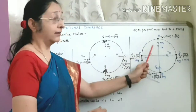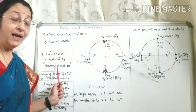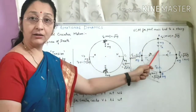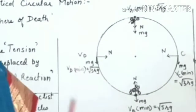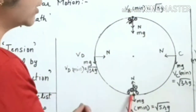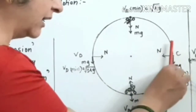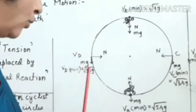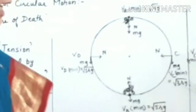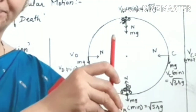In analogy with this, in the sphere of death, the tension is replaced by the normal reaction, acting in the same direction. The weight always acts in the downward direction. At the highest position, the weight acts downward; at the lowest position, the motorcyclist's weight also acts downward. The normal reaction is always perpendicular to the surface, exerted perpendicular to the surface of the sphere.